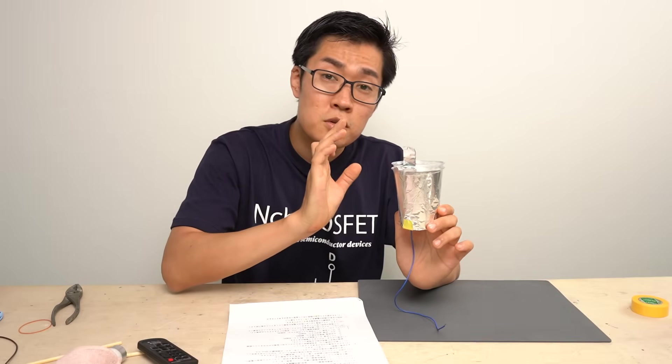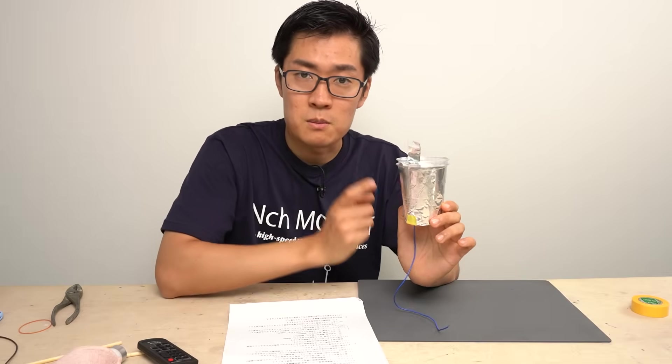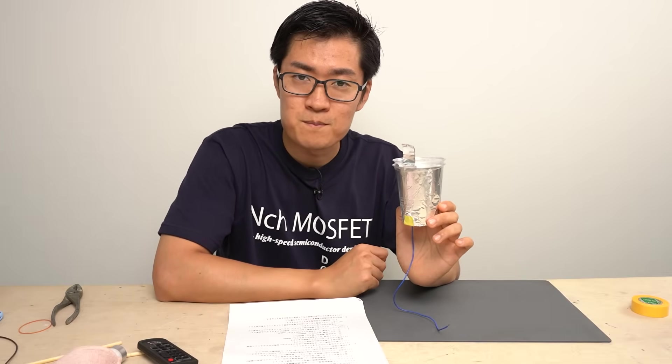Therefore, by minimizing corona discharge as much as possible we can increase the voltage stored in the Leyden jar which allows us to observe a long distance spark discharge. Based on this idea, let's see how we can improve the device I made in the previous video.